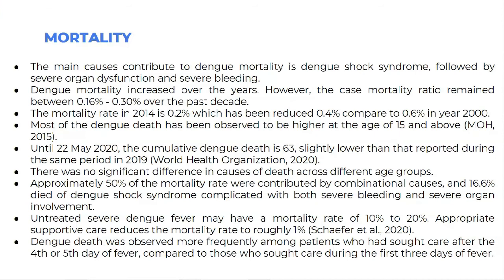This slide is about mortality. The main causes contributing to dengue mortality are dengue shock syndrome (DSS), followed by severe organ dysfunction and severe bleeding. Dengue mortality has increased over the years; however, the case fatality ratio remained the same between 0.16% to 0.3% over the past decade. The mortality rate in 2014 was 0.2%, reduced from 0.6% in the year 2000.